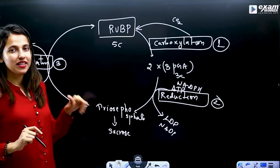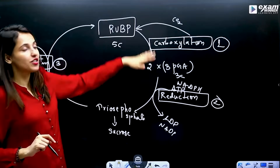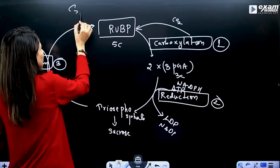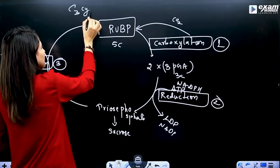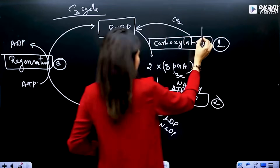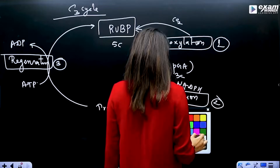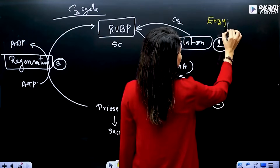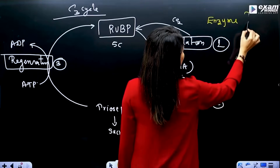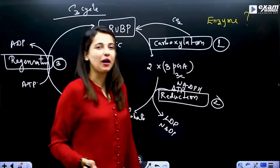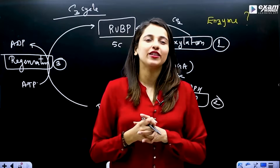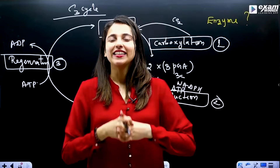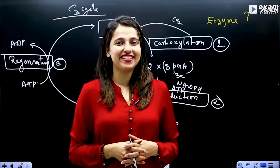Which enzyme catalyzes this carboxylation reaction in the C3 cycle? The enzyme catalyzing this first reaction is RuBisCO. Comment down below. Thank you so much, and all the very best!